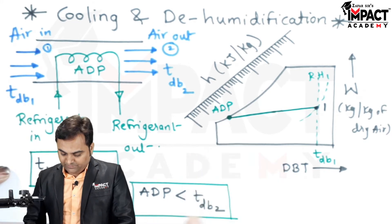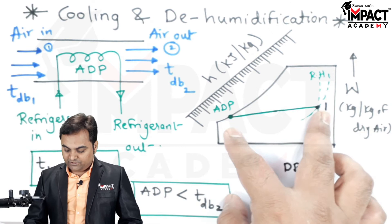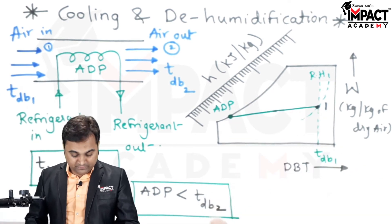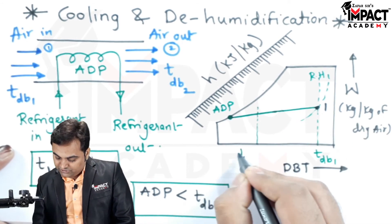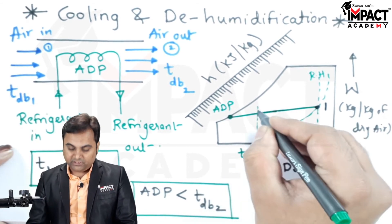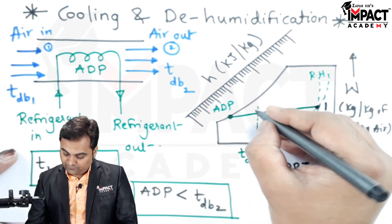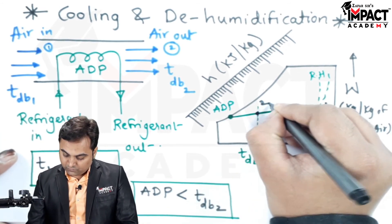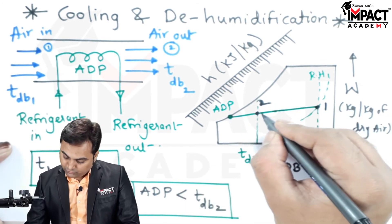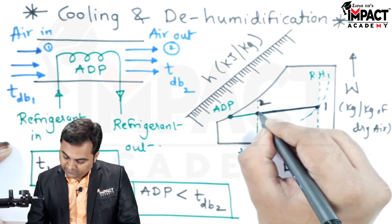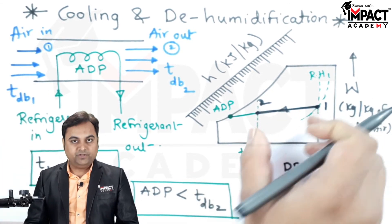The apparatus dew point temperature is less than the exit dry bulb temperature of the air, so the exit dry bulb temperature should lie on this line. Plotting the exit dry bulb temperature upward, where it intersects this line gives us point number two, which is the dry bulb temperature of the exit air. Joining point one and point two indicates the process, which is called the cooling and dehumidification process.